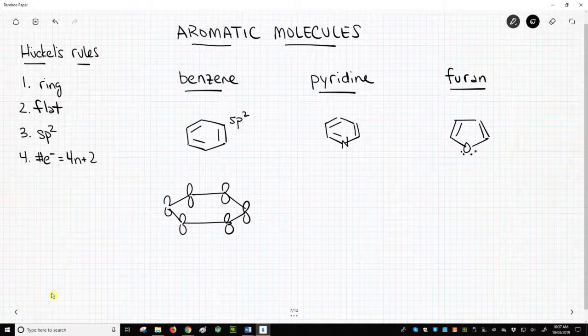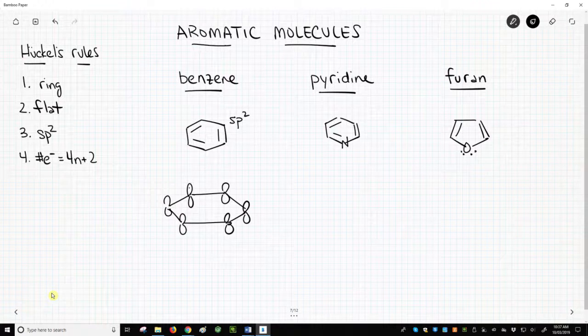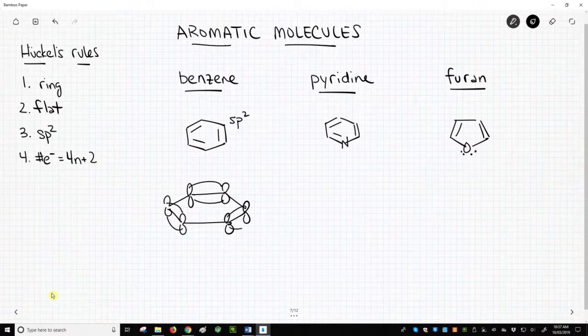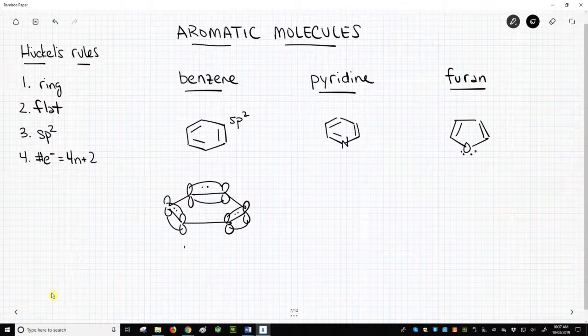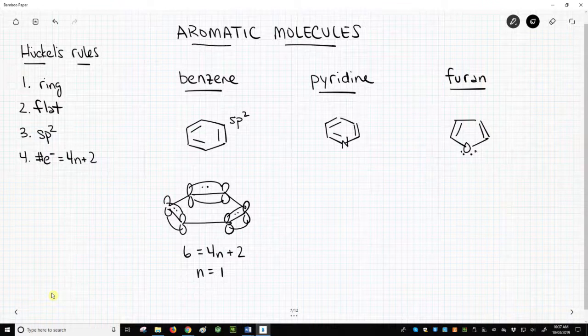How many electrons are in these p orbitals? Well, those 6 p orbitals are making 3 pi bonds. Those are our carbon-carbon pi bonds. At 2 electrons per pi bond, that's 6 electrons. Put 6 in our formula. 6 equals 4n plus 2. n solves as 1. 1 is a non-negative whole number, so benzene is aromatic.